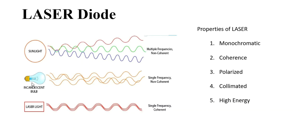Next, coming to incandescent bulb. We can expect the incandescent bulb to emit radiation with a single frequency, but it won't be in the same phase. Finally, the laser light. We can expect the laser light to be emitted in a single frequency and coherent.